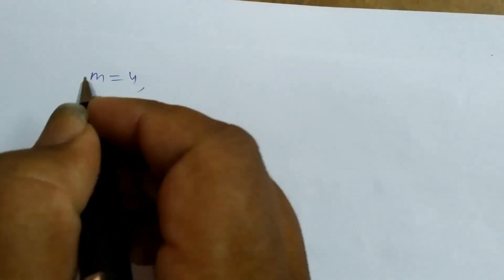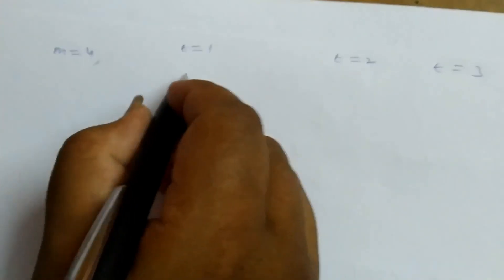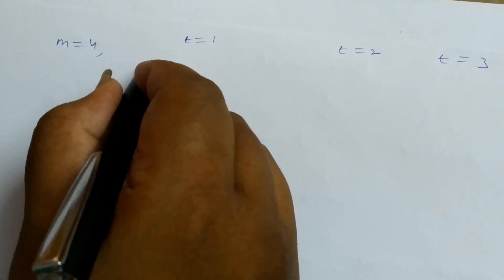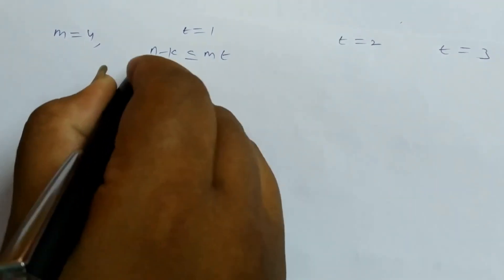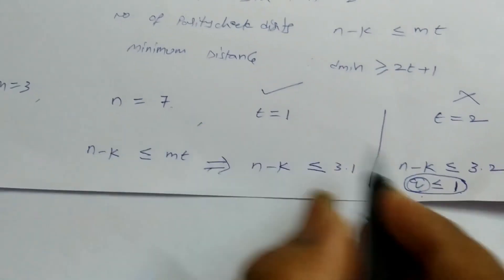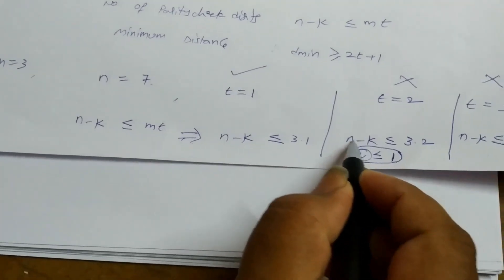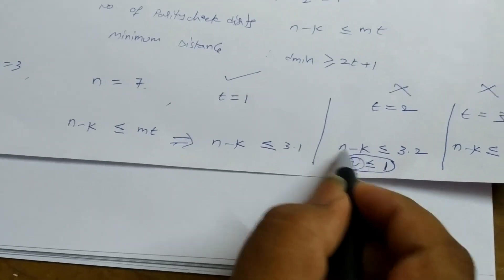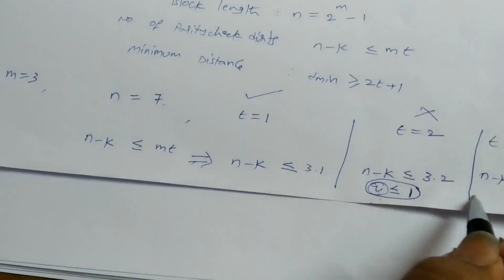Similarly, for m equal to 4, there is a possibility to find t equal to 1, t equal to 2, and t equal to 3. In this case, the message length n minus k can be calculated, and n minus k must always be less than m times t. If m is equal to 4, the n value is fixed at 15.